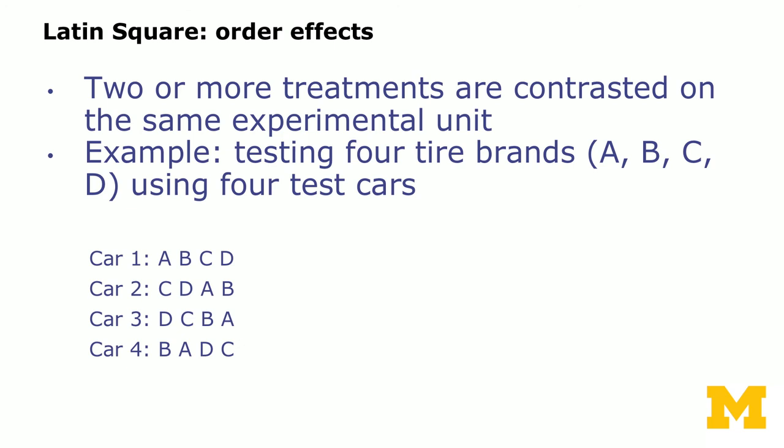When controlling for order effects, there's a very efficient experimental design called the Latin square. This is when two or more treatments are contrasted on the same experimental unit. For instance, if you want to test four tire brands A, B, C, D using four different test cars, the order of tire brands distributed over cars using a Latin square assigns each brand to each position exactly once. Car one uses order ABCD, car two CDAB, car three DCBA, and car four BADC. Looking at the same position — say front left — you have all four different tire brands represented, giving you an efficient design to control for order effects.